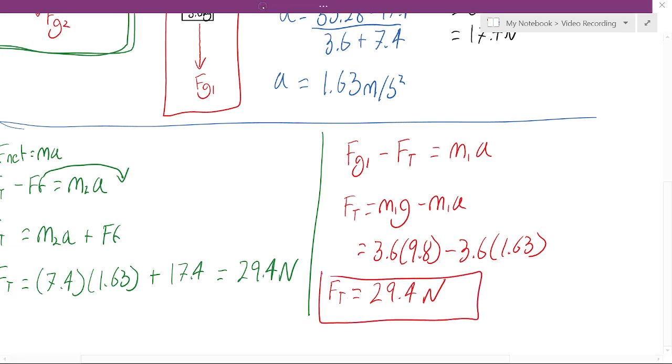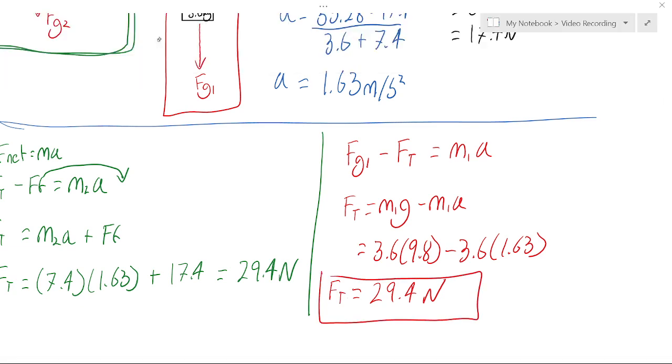So in both cases we get 29.4. So it doesn't matter which mass you look at to calculate tension, but you do have to look at one mass instead of both of them at the same time in order to isolate the tension force.